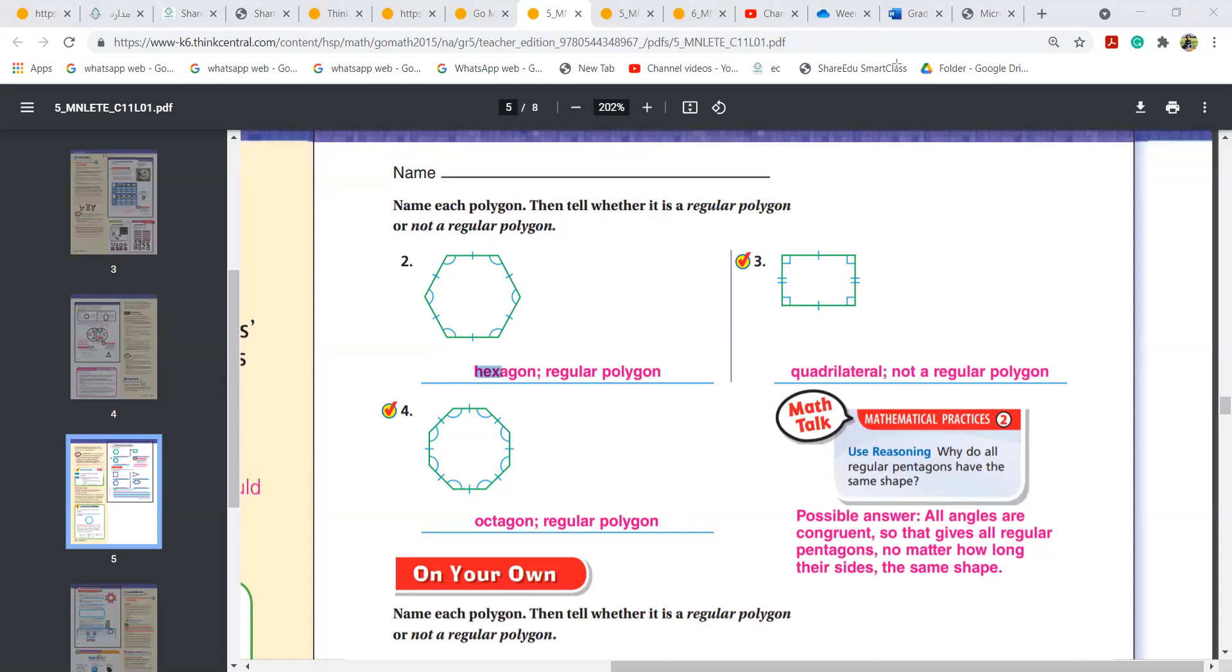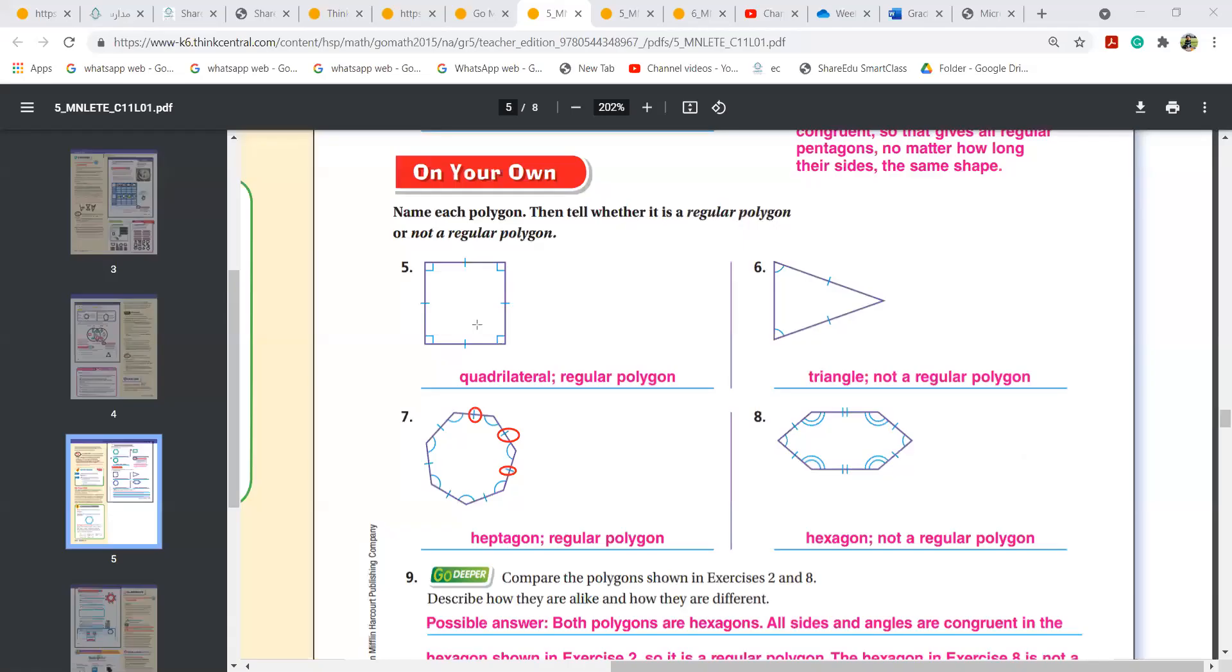Okay. Now, please write down. Okay. Again, this has four sides. It's called a quadrilateral. Okay? This has three sides. It's called a triangle.